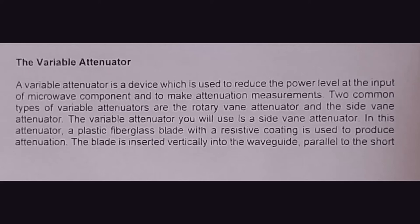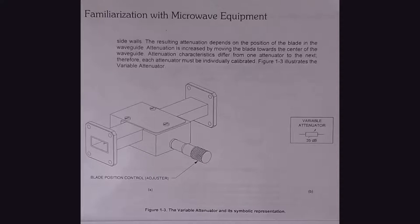An attenuator is a device that can reduce the power level at its output. A plastic fiberglass with a resistive coating, called a blade, is used to absorb the microwave power. The blade is placed inside the waveguide in parallel to the waveguide sidewalls. A fixed attenuator has the blade in a fixed position. A variable attenuator has a controllable blade position. The symbol of a variable attenuator is shown here. If the control arm is moved all the way in, the blade is positioned at the middle of the waveguide — attenuation is maximum and literally no signal can pass through.